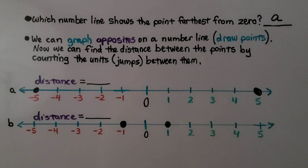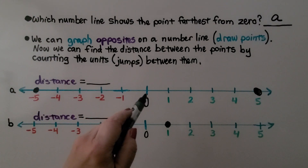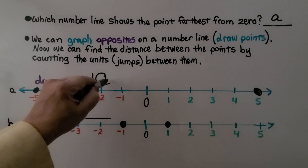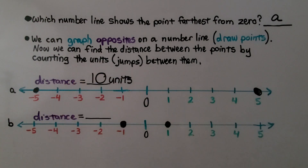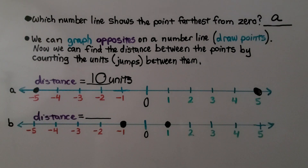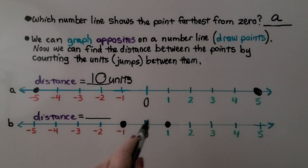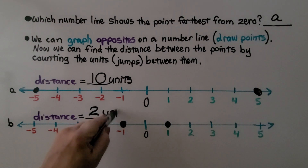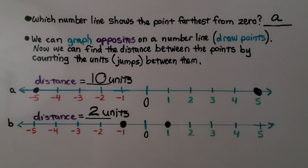Now we can find the distance between the points by counting the units — the jumps between them. From negative five to positive five: we know each is five jumps away from zero, so that's ten jumps total. The distance is ten units, whatever the units are — ten centimeters if centimeters, ten inches if inches. The distance from negative one to positive one: each is one jump from zero, so one plus one equals two — the distance is two units.